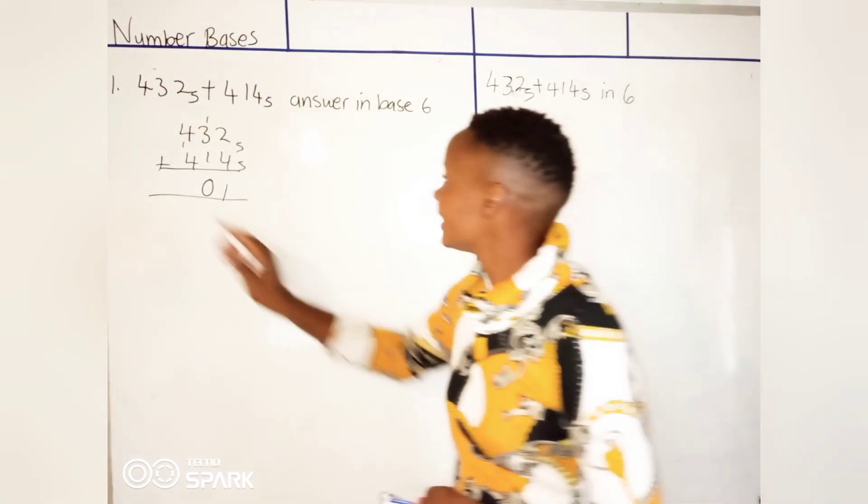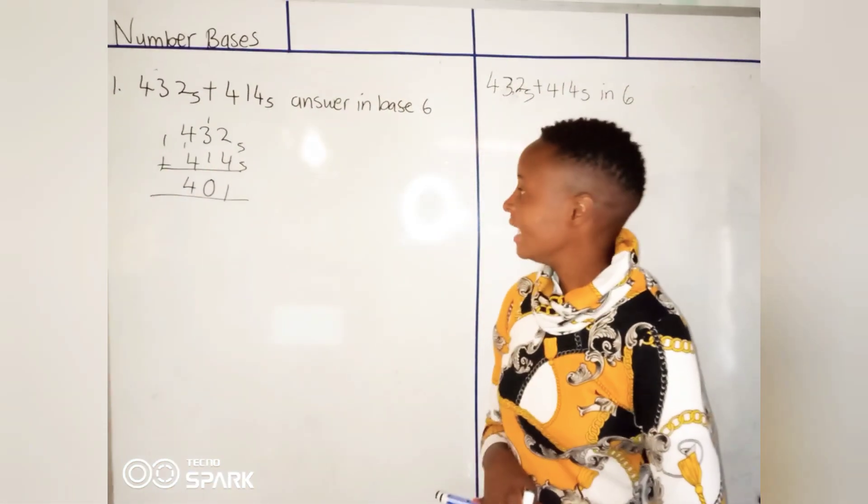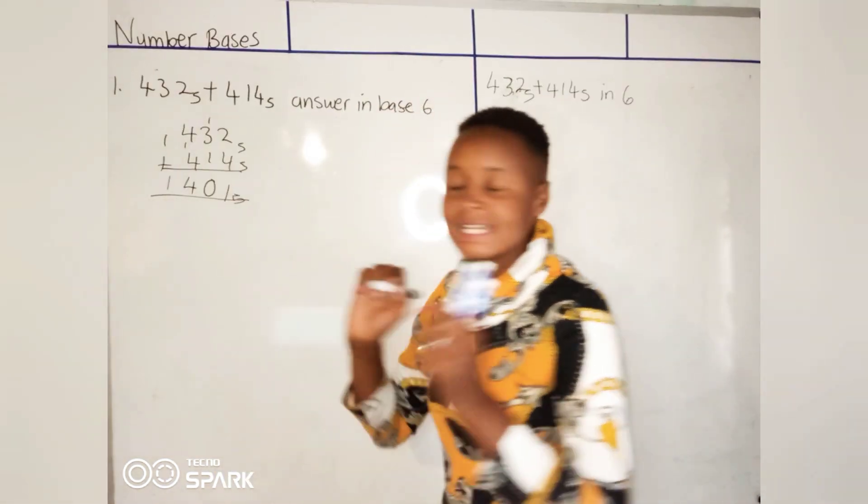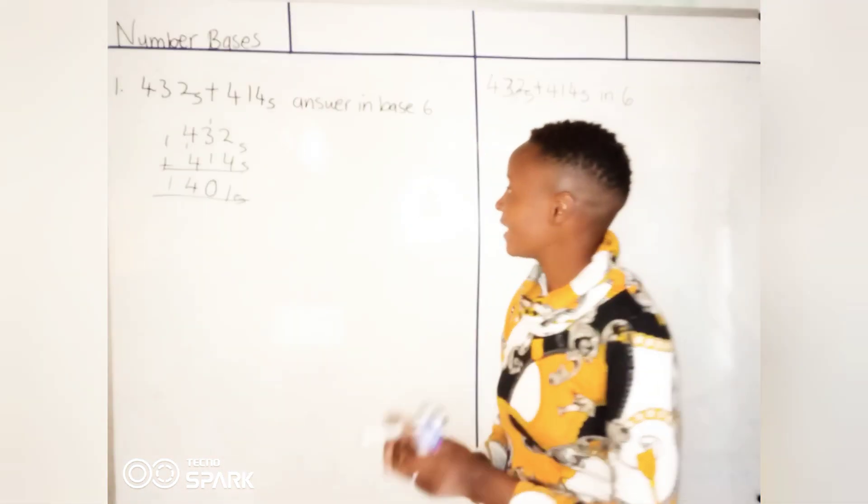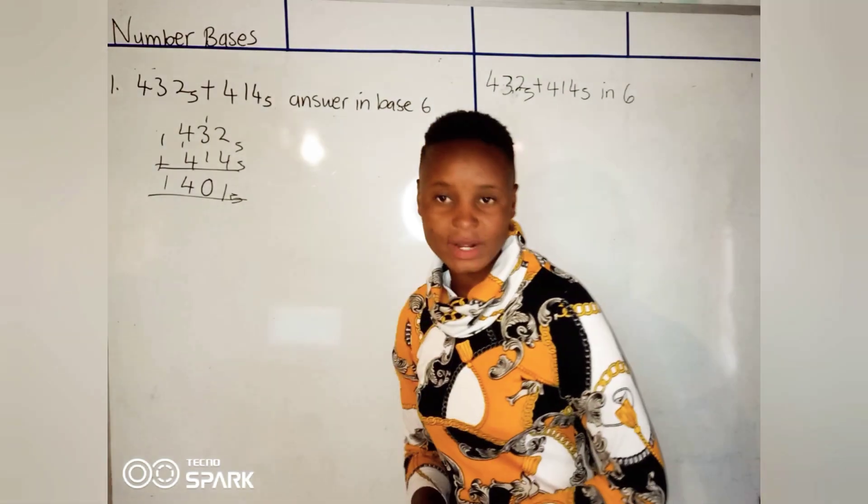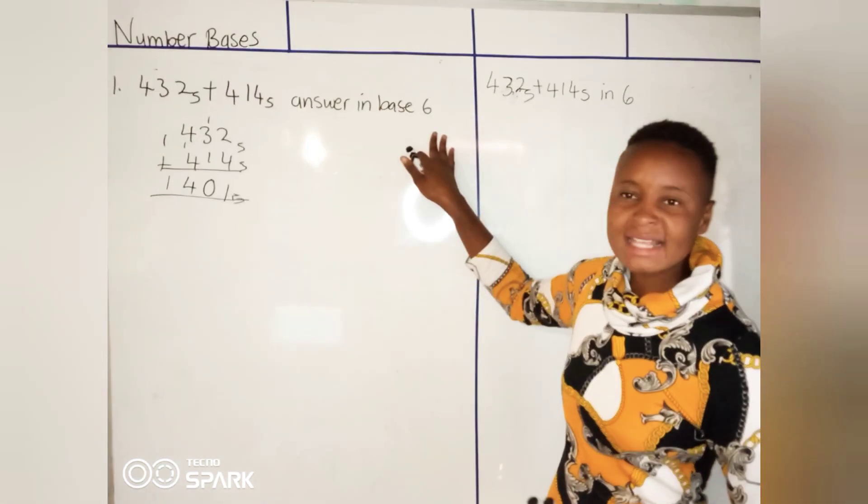And then 1 plus nothing, it will just be 1. So 432 base 5 plus 414 base 5 is 1401 base 5.